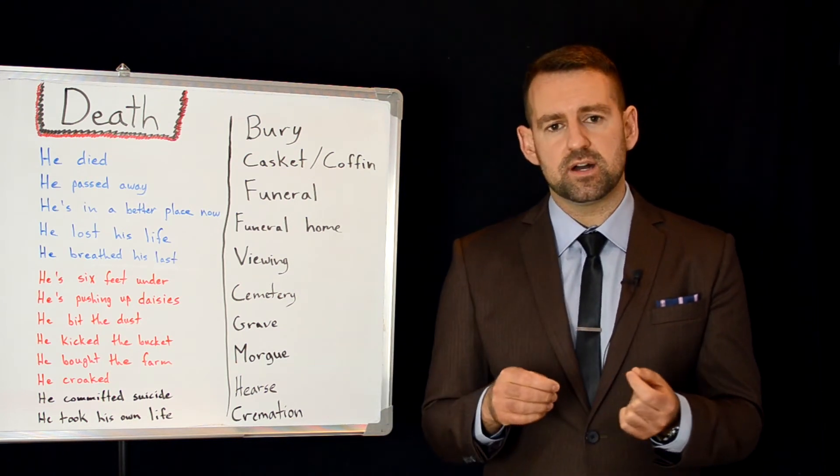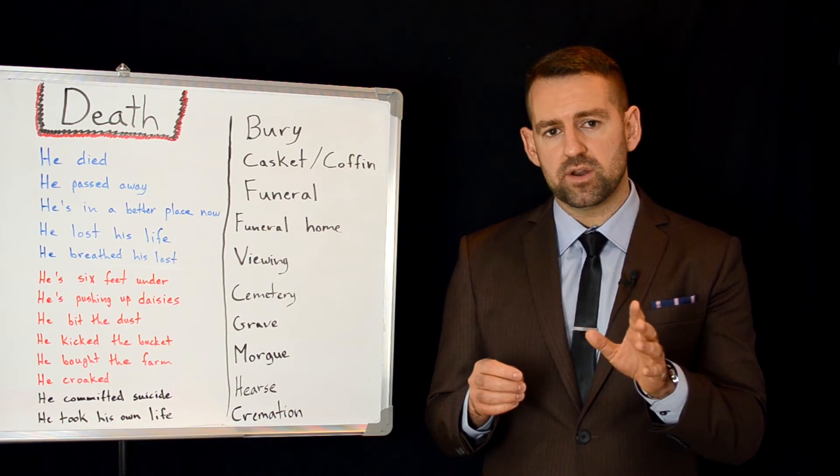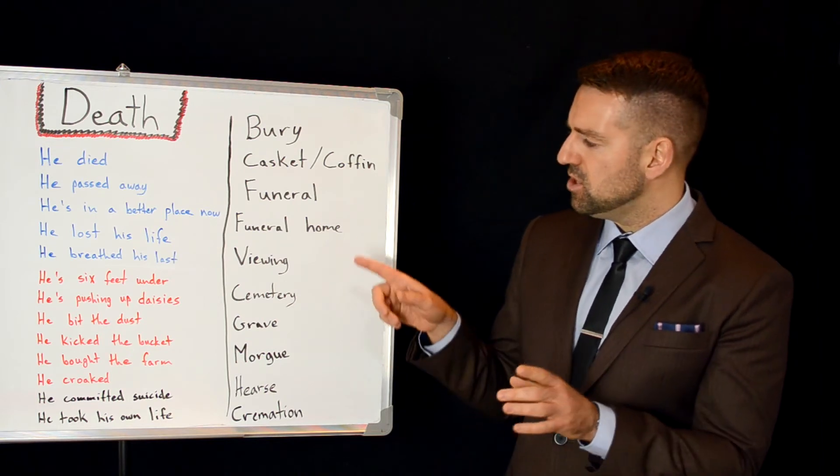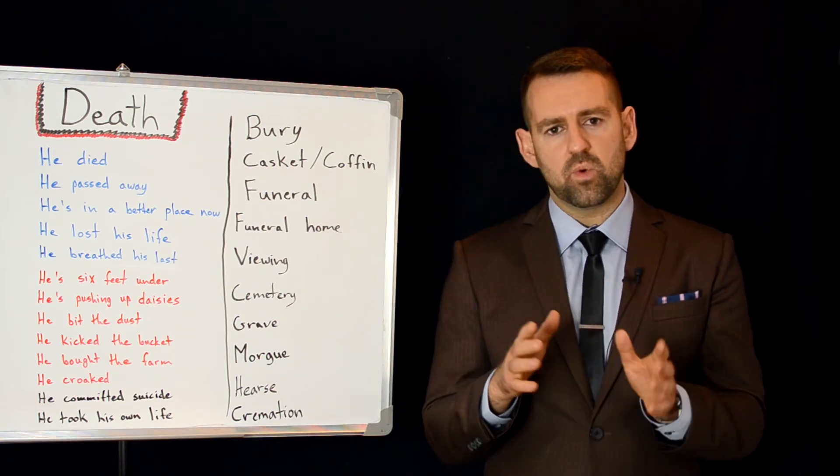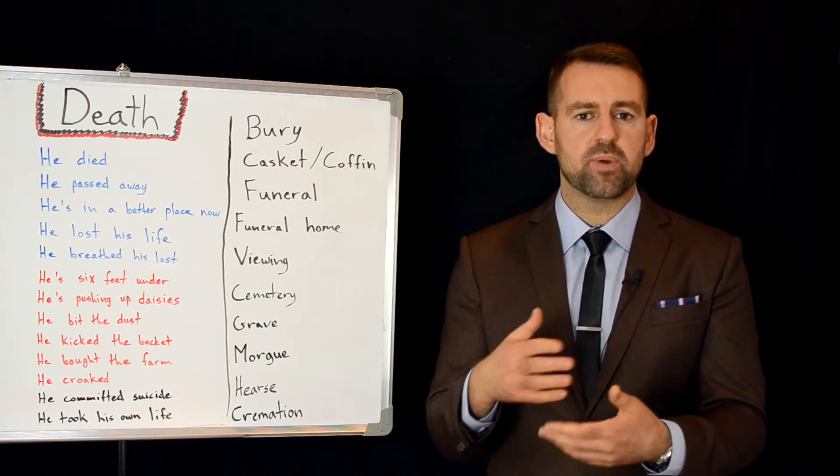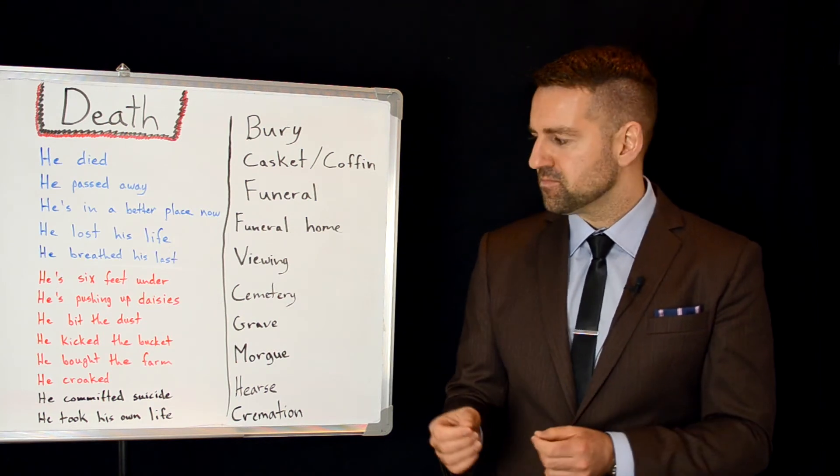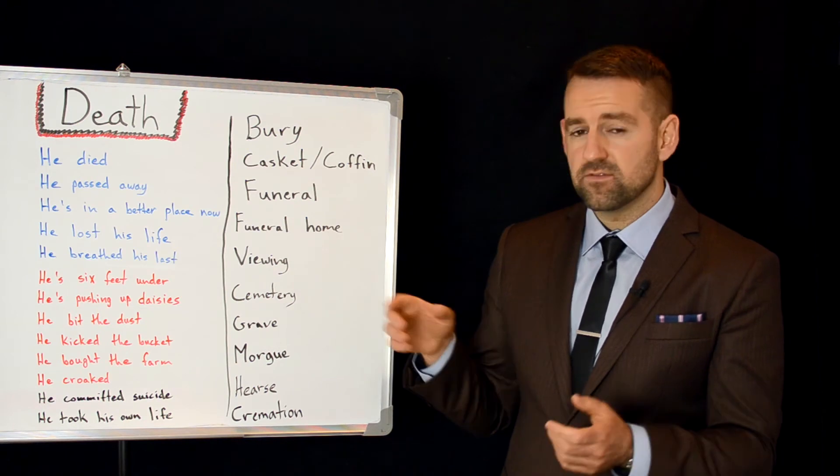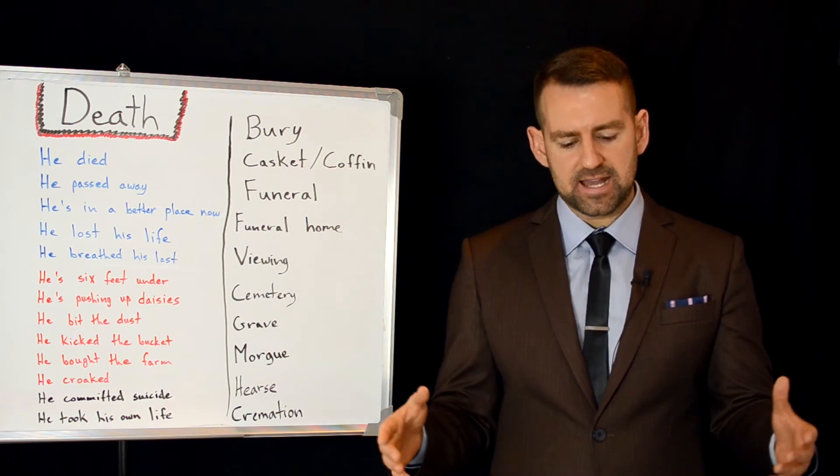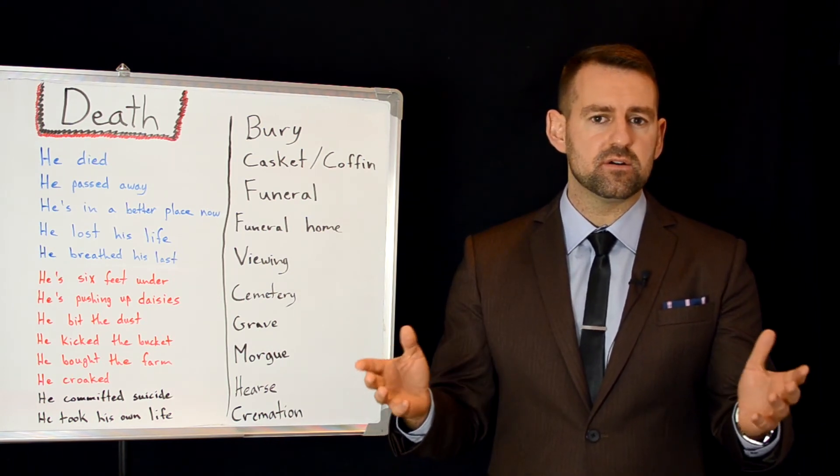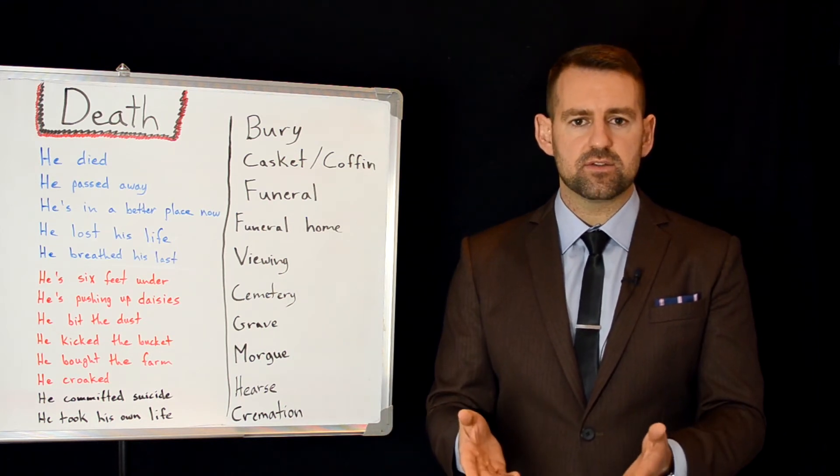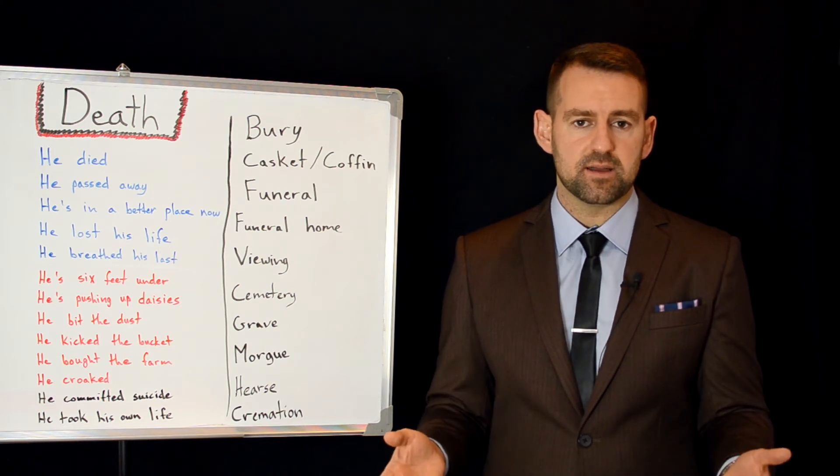A morgue. That's the place where the body is kept right after death. And then usually it's moved from the morgue to the funeral home. And when it's at the funeral home, the staff who work there, they prepare the body for the burial. And the viewing. Viewing happens usually at the funeral home. And it's where the casket is open. And all the friends and relatives of the person can come and see the body for the last time, before the burial.